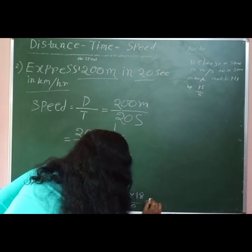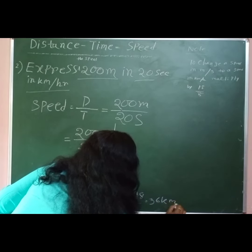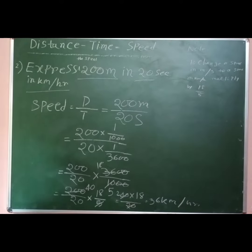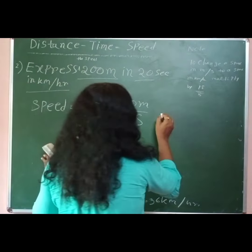So here we are getting 36 kilometers per hour. But in shortcut method we can do this calculation like this.